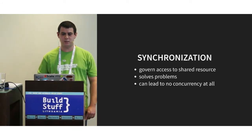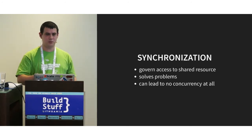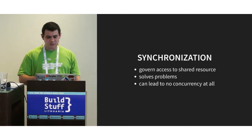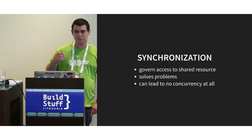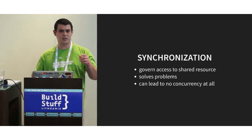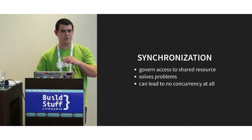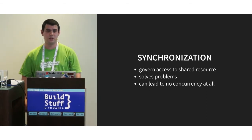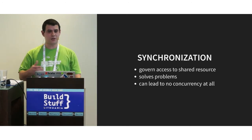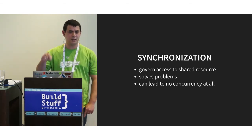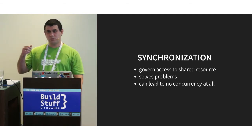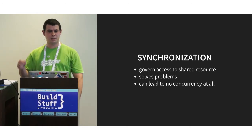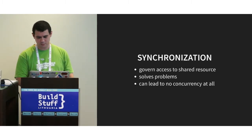Synchronization effectively helps deal with atomicity and order violation issues. But instead we can have deadlocks, because if we have locks in two threads waiting for each other to be released, it will never happen. Synchronization also introduces starvation — a thread waiting for access to a shared resource can never get it because other threads keep getting in line first. Additionally, checking whether you have access takes execution time from other threads.